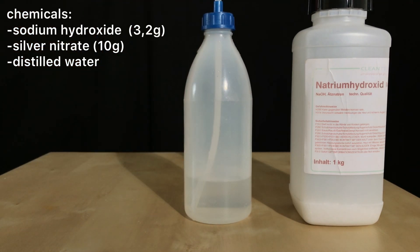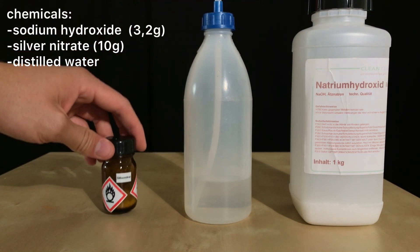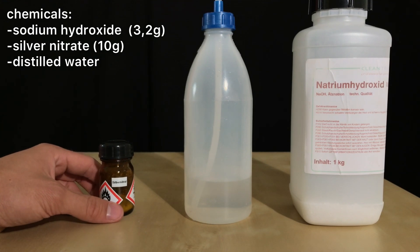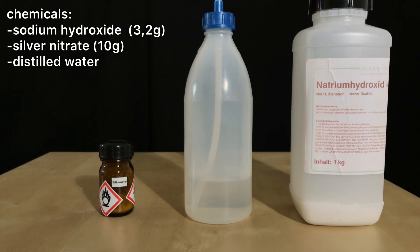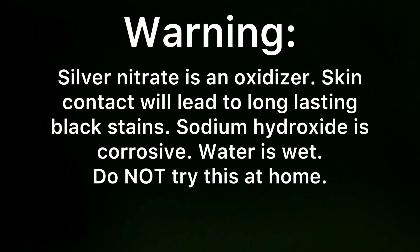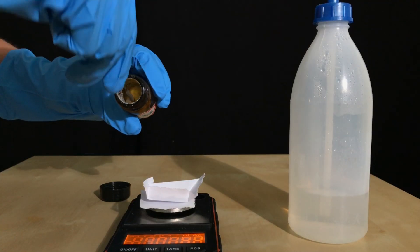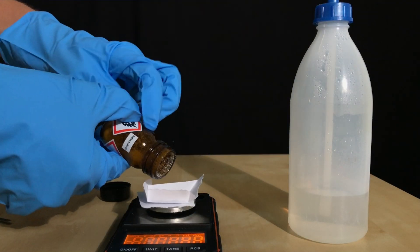In order to make silver(I) oxide, only three things are needed: sodium hydroxide, distilled water, and silver nitrate. As always, here's the disclaimer: don't try this at home, and let's dive right into this experiment.